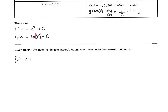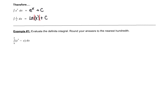Example number 1: evaluate the definite integral and round your answer to the nearest hundredth. I'm going to break this integral up into two separate pieces. The integral of e to the x we know is just e to the x. And then the integral of the x term — x has a power of 1 — so we can use the power rule: add 1 to the power and divide by that power. We're going to evaluate this from 0 to 2.